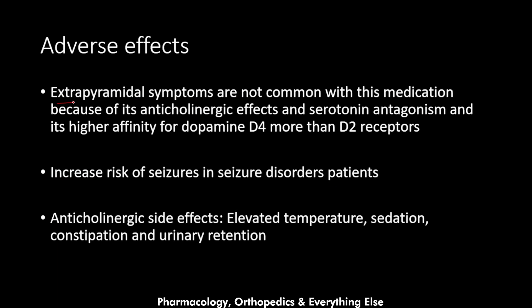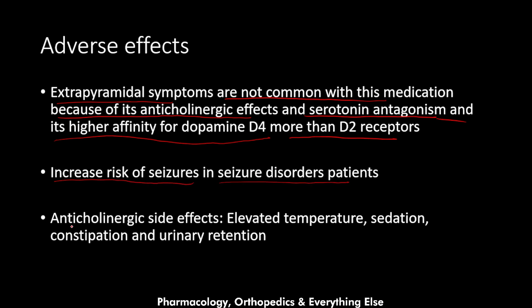Extrapyramidal symptoms are not common with clozapine due to its anticholinergic effects, serotonin antagonism, and higher affinity for dopamine D4 receptors over D2 receptors — all of which make this medication produce fewer extrapyramidal symptoms than other antipsychotics. It also increases the risk of seizures in patients with seizure disorders, and causes anticholinergic side effects by inhibiting muscarinic receptors M1, M2, M3, and M5, leading to elevated temperature, sedation, constipation, and urinary retention.